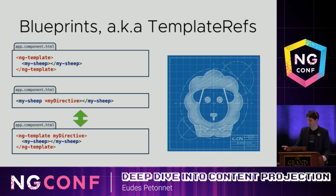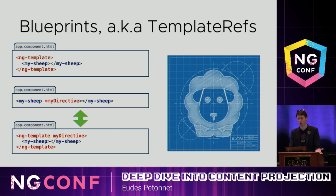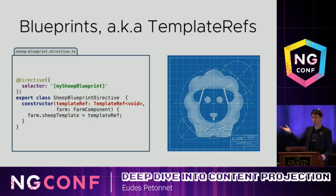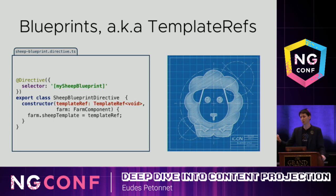How do you get a hold of the actual template ref object to use it? Easy options are querying with ViewChild or ContentChild, but no one likes writing ng-templates — it's verbose. A nicer approach is using a structural directive, which gives a clean one-line syntax. You write your directive as an attribute directive with an attribute selector, and in the constructor you ask for the template ref. Angular will give you the template ref for that structural directive directly in the constructor. In our case, I ask for the template ref, ask for the parent farm component, and tell it: here are the blueprints for sheep.